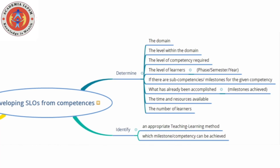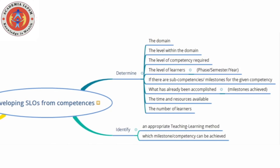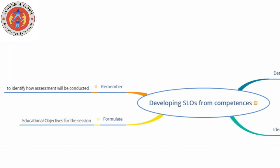Once you have all this information, you can identify an appropriate teaching-learning method and determine which milestone or competency can be achieved. When you have identified these things, you will be able to figure out whether you can address multiple competencies that target the same domain or the same level within the same domain in a single session. You will then formulate educational objectives for the session, and you must remember to identify how assessment will be conducted at the end.